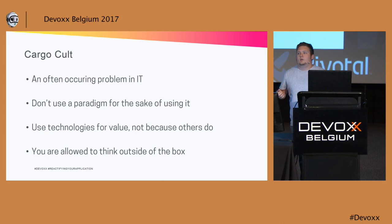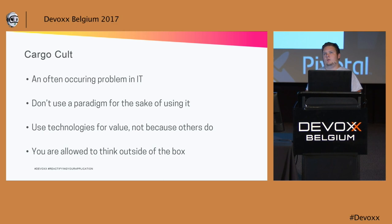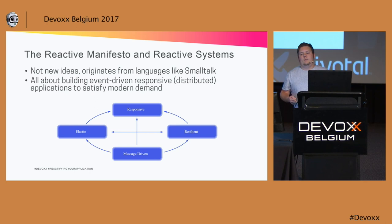That's also something we tend to see in IT. We go to conferences and see interesting technologies, but we don't always apply them in the right sense, because we're mixing up the reason why and the action itself. The same goes with all technologies — we're used to doing things in a certain way, but that might not be the ideal way. An example of being able to think outside of the box is actually the reactive manifesto and reactive systems.